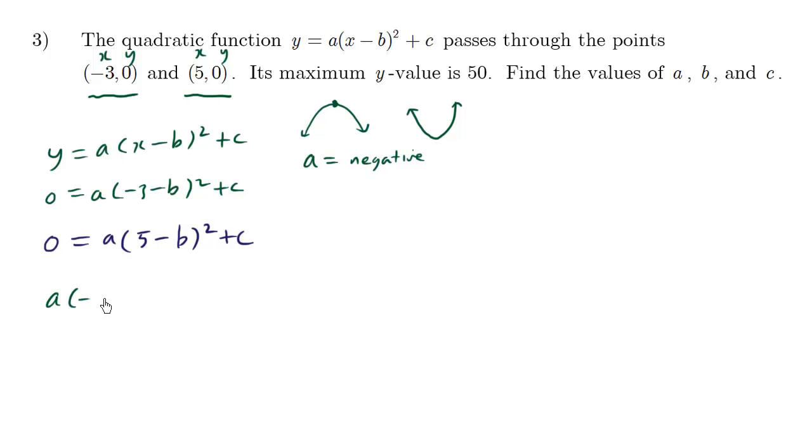So we're going to say that a times the first part is equal to the second part here. We have c's on both sides of the equation, so we can just cancel them out. We have both sides have a, so we can divide both sides by a and cancel these out. And what we're left with is a binomial is equal to a binomial. And we can just expand this out using FOIL.